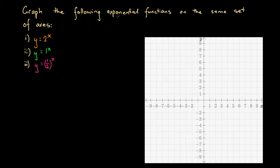Here we're asked to graph the following exponential functions on the same set of axes. We've got three functions: the first one in orange is y equals 2 to the power of x, the second one in green is y equals 1 to the power of x, and the third one in pink is y equals half to the power of x. We're doing this exercise to figure out how exponential functions look when we have different bases for the exponents.